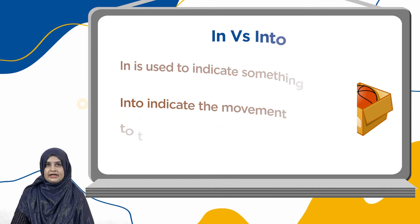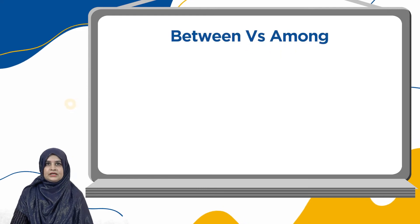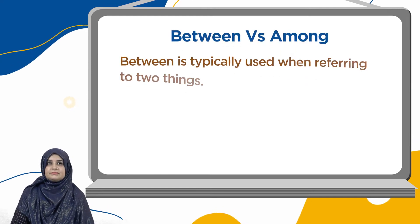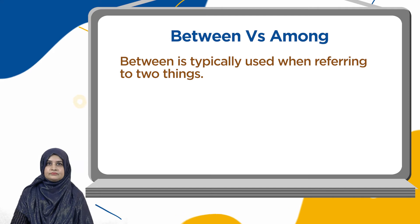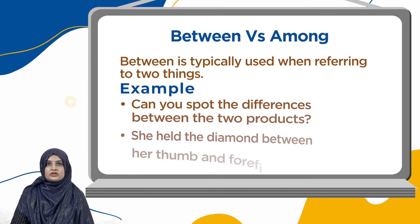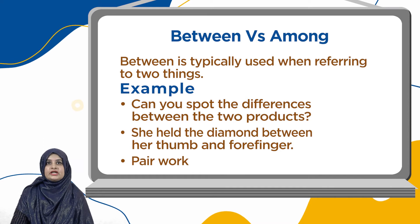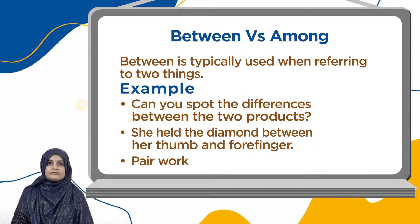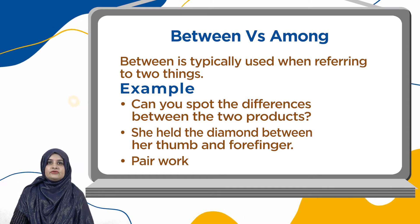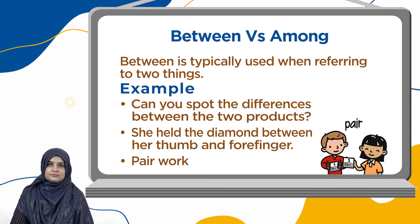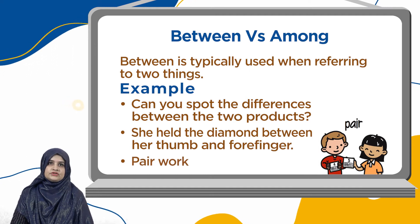Next, we have between versus among. "Between" is typically used when referring to two things. For example, can you spot the differences between the two products? She held the diamond between her thumb and forefinger. Even you can depict from this picture — the peer work is being done between two students only.